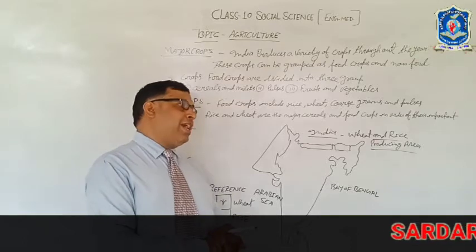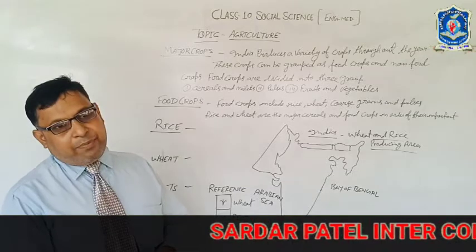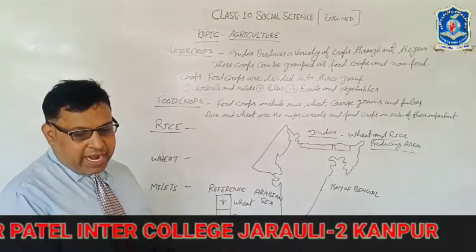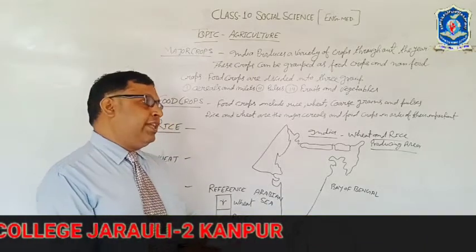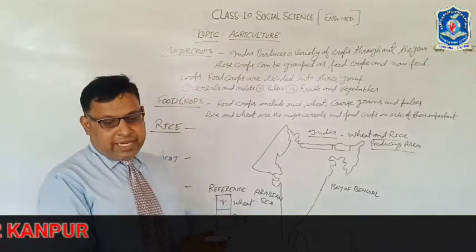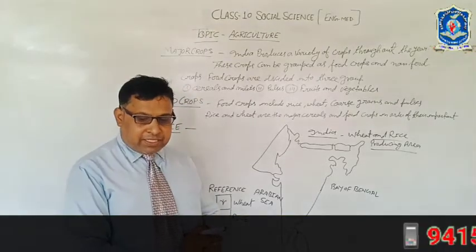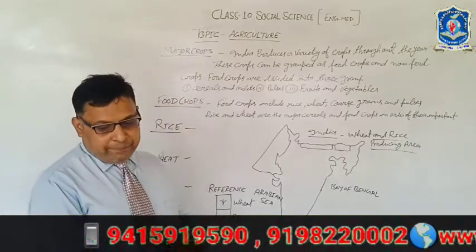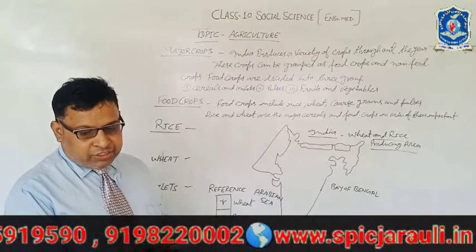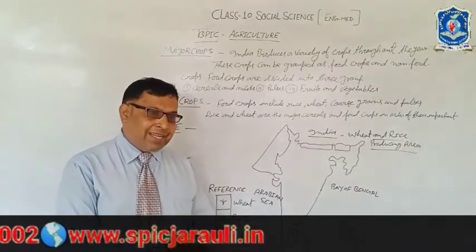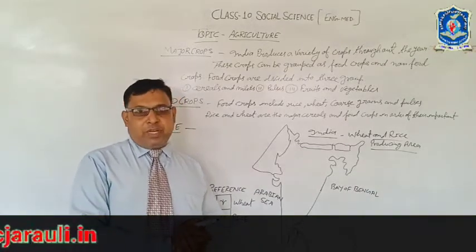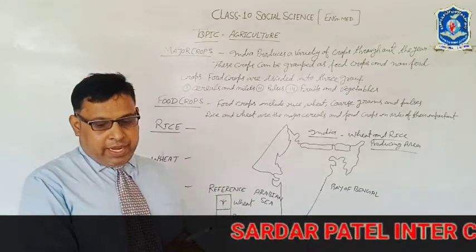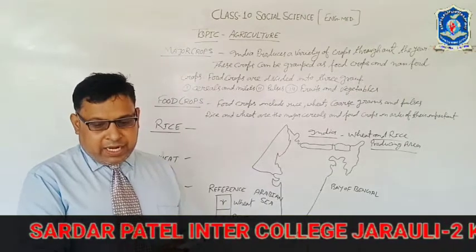राइस की फसल जुलाई और अगस्त के महीने में की जाती है। इसके लिए 100 cm से 200 cm तक वर्षा की आवश्यकता होती है। जहाँ पर कम वर्षा होती है वहाँ पर सिंचाई की आवश्यकता होती है। इसके लिए जलोढ़ मिट्टी, विशेषकर चिकनी मिट्टी की आवश्यकता होती है जिसमें पानी सोखने की क्षमता कम होती है और लंबे समय तक पानी रह सके।